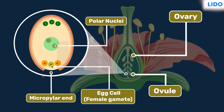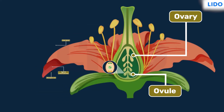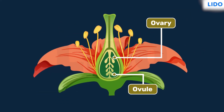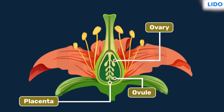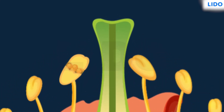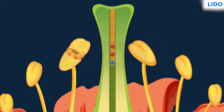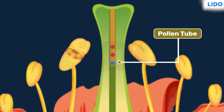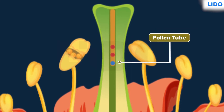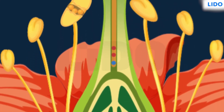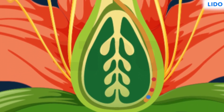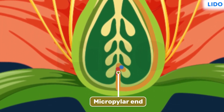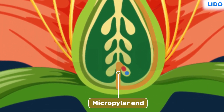The ovule is attached to the ovary by a connection called the placenta. The pollen grain lands on the stigma and forms a tube called the pollen tube that carries the male gametes through the style and inside the ovule via the micropylar end.